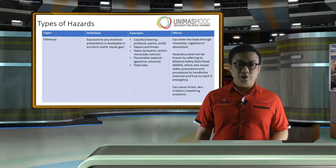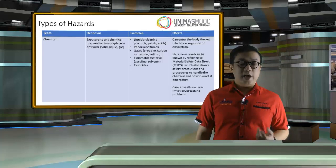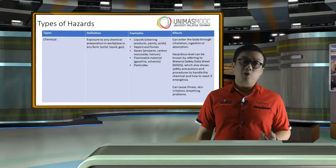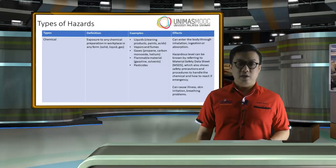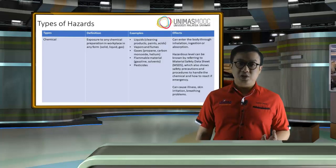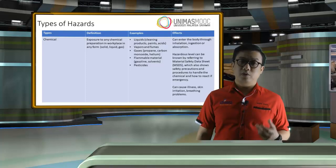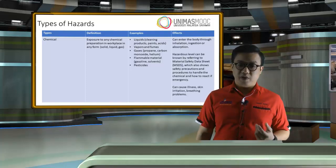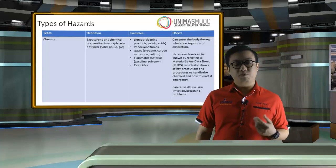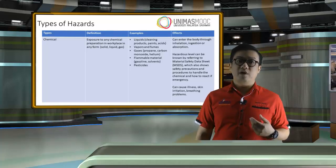Chemical hazards involve exposure to any chemical preparation in the workplace in any form — solid, liquid, or gas. Examples include liquids, cleaning products, paints, acids, vapors and fumes, gases like propane, carbon monoxide, helium, flammable materials such as gasoline, solvents, and pesticides. Chemical hazards can be very serious to the human body, entering through inhalation, ingestion, or absorption — similar to biological hazards. The hazardous level can be known by referring to the Material Safety Data Sheet (MSDS), which also shows safety precautions and procedures to handle the chemical and how to react in an emergency. It can also cause illness, skin irritation, and breathing problems.